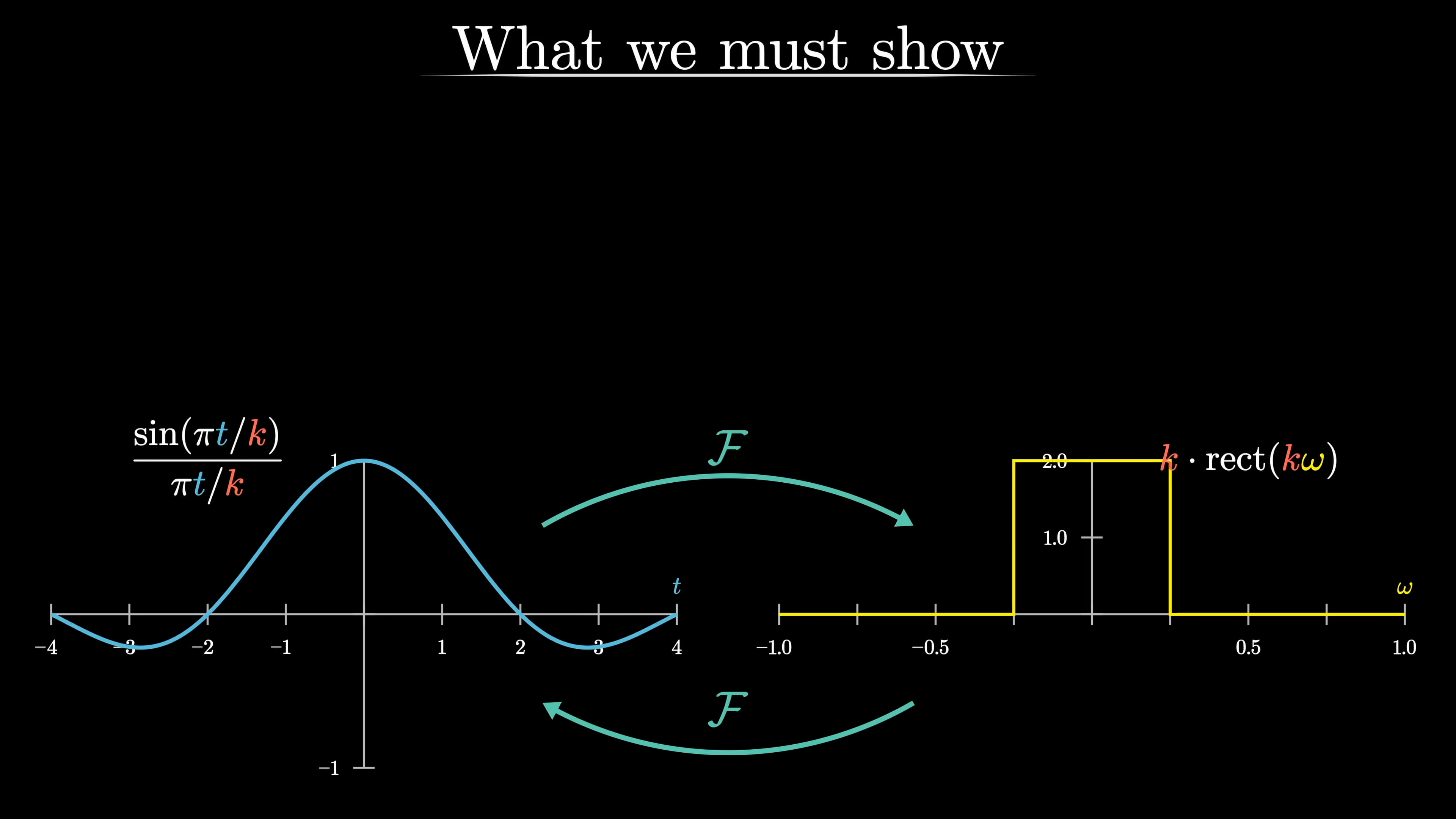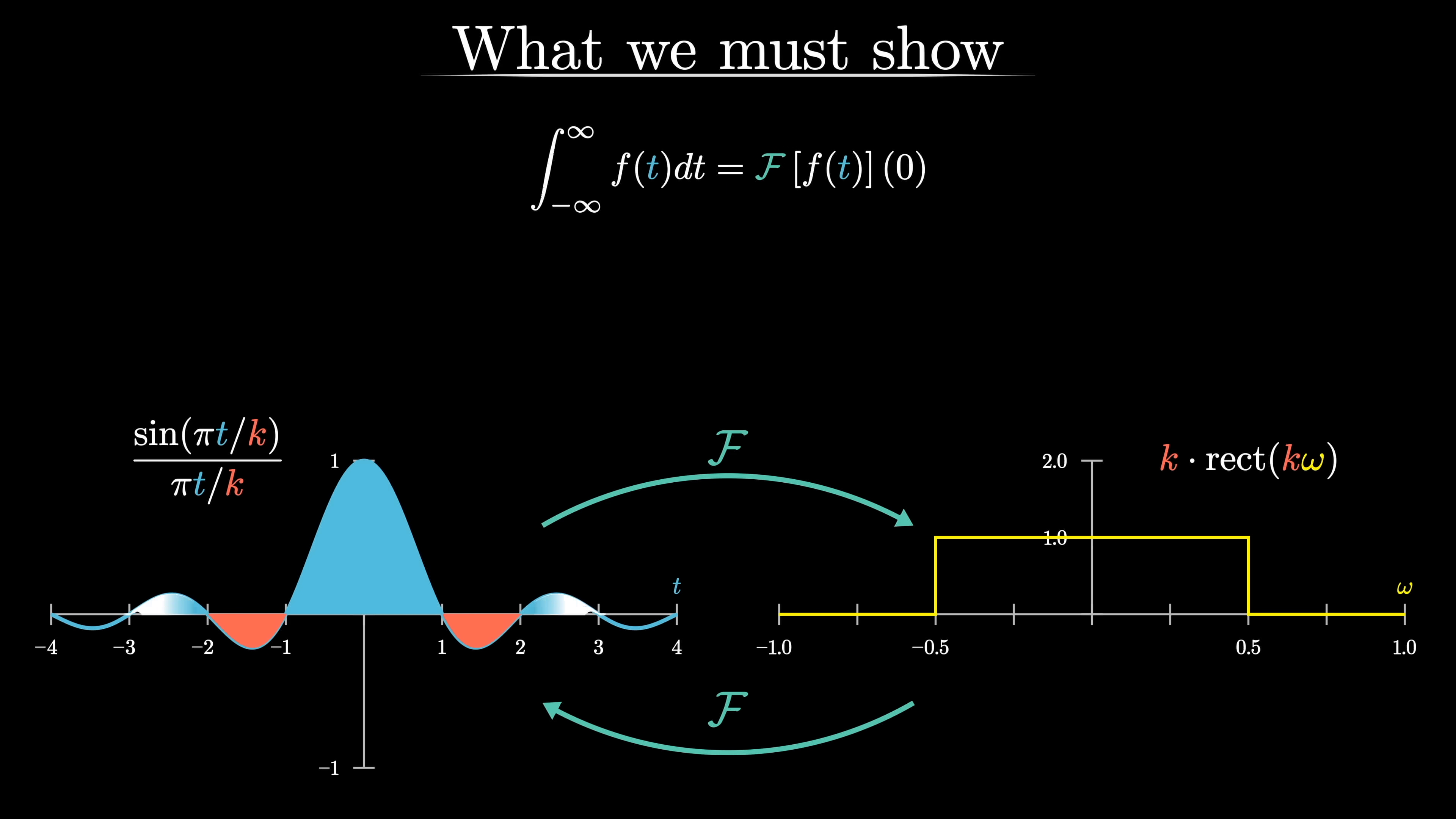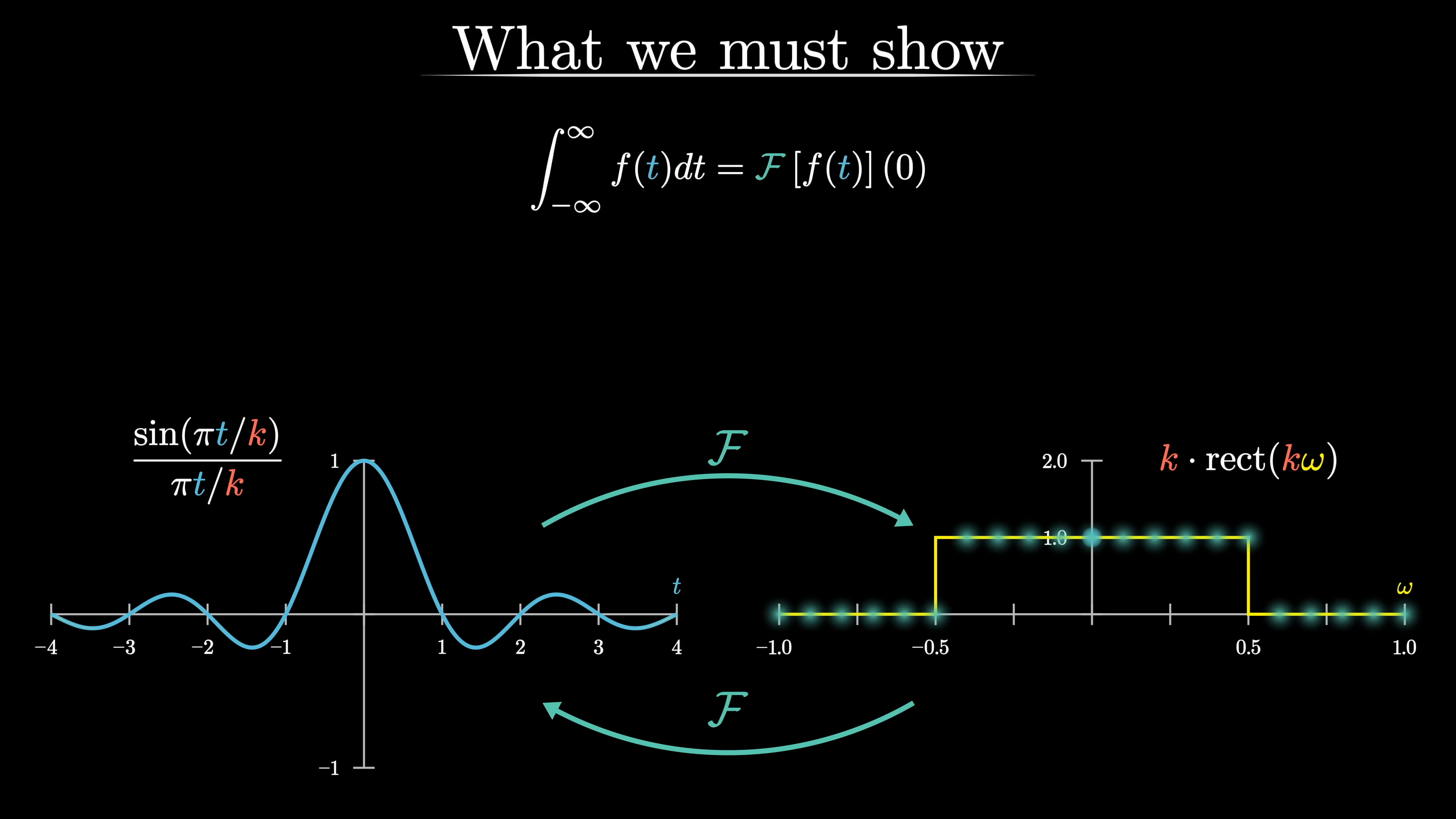For example, one very nice little fact, another thing on our list of things to show, is that if you want to compute the integral of some function from negative infinity to infinity, this signed area under the entirety of its curve, it's the same thing as simply evaluating the Fourier transformed version of that function at the input zero. This is a fact that will actually just pop right out of the definition and it's representative of a more general vibe that every individual output of the Fourier transform function on the right corresponds to some kind of global information about the original function on the left.